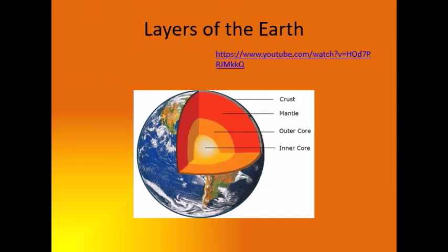If you look at the layers of the earth going from the outside in, we've got the crust, mantle, outer core, and inner core. Be careful with the spelling — the mantle is M-A-N-T-L-E, which people often get wrong. We need to be able to label these four layers on our earth diagram in order, and I want you to learn a little bit more about these today.